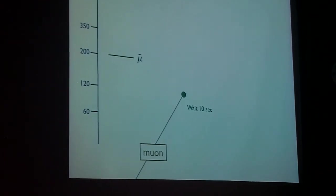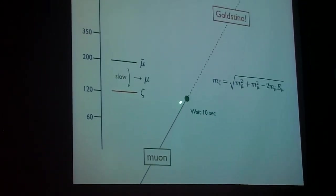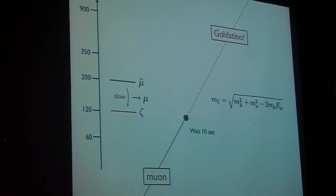We know that energy momentum is conserved. So you can't just have a smuon decay to a muon and nothing else. Something must be going the other way. You can infer the mass of the thing going the other way via a combination of the smuon mass, the muon mass, and the energy of that muon.